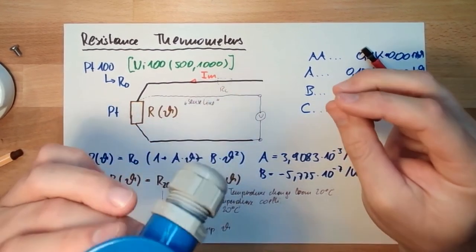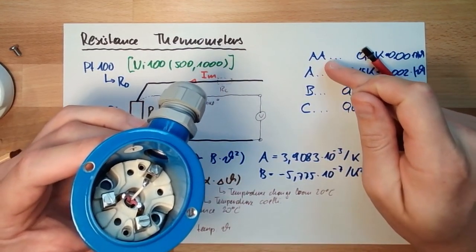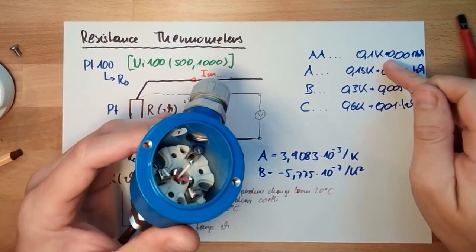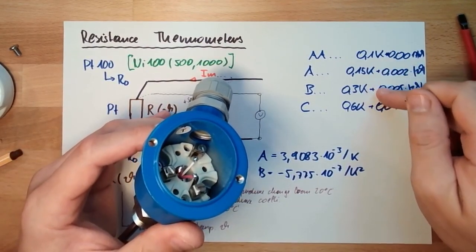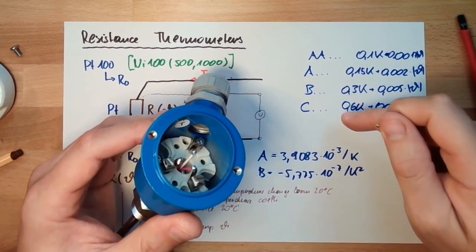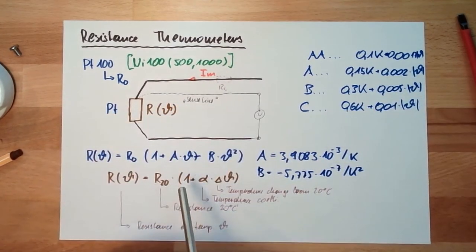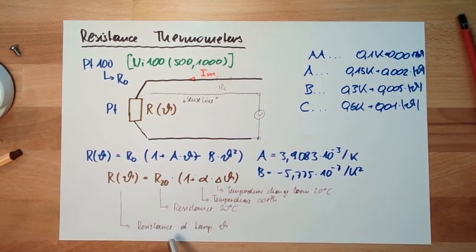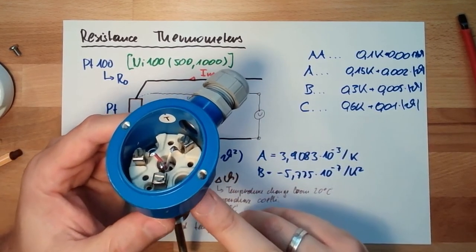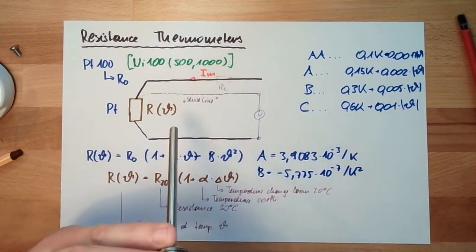Can be used, class AA they can be used between minus 50 and 250 degree Celsius. There are some out there. Class C, they are even specified from minus 196 degree Celsius to plus 600. So a very broad range. And this class B is also from minus 196 to 600 degree Celsius maximum.